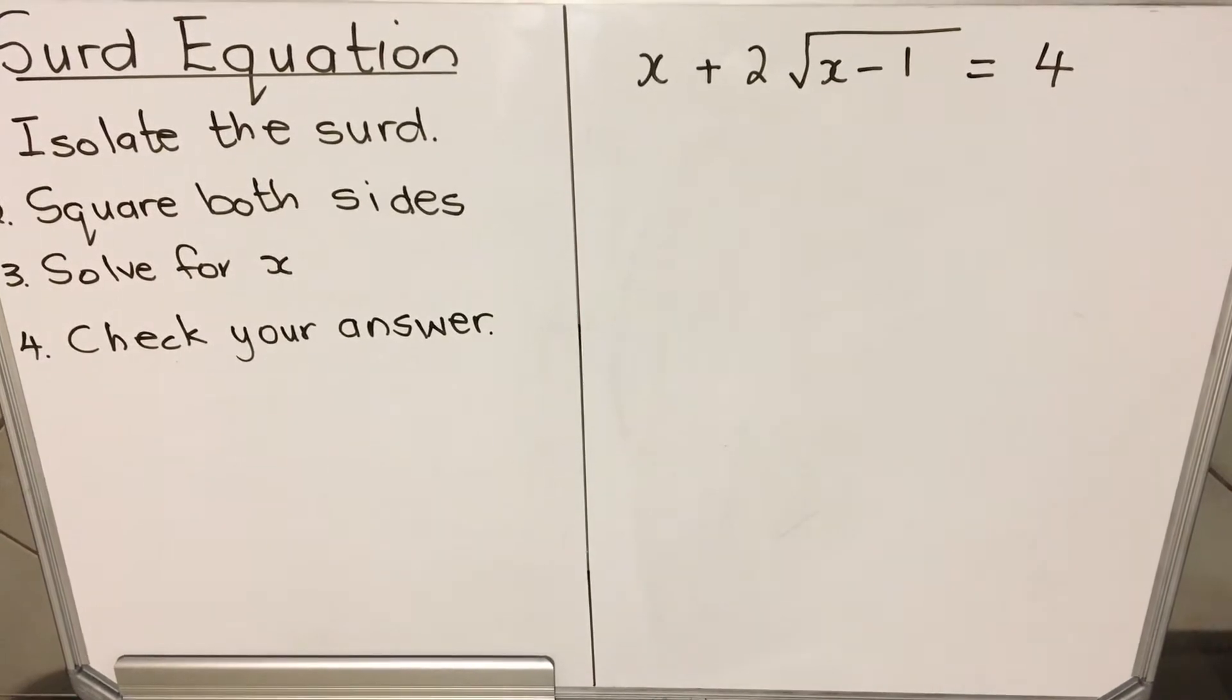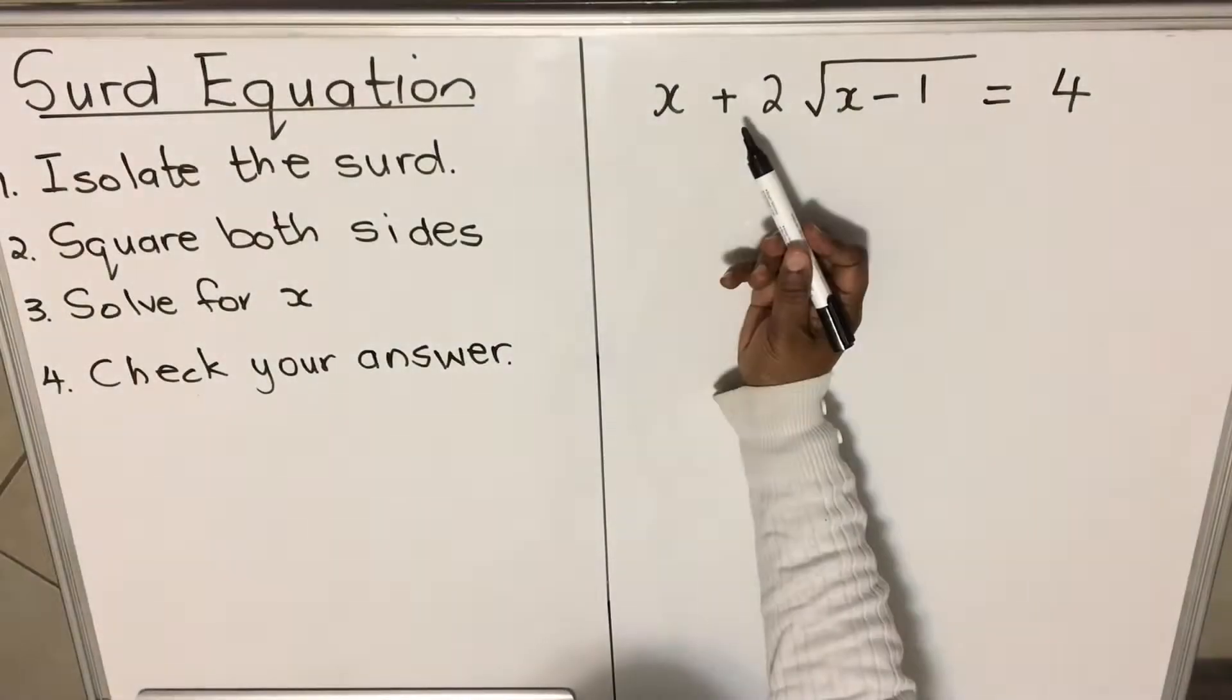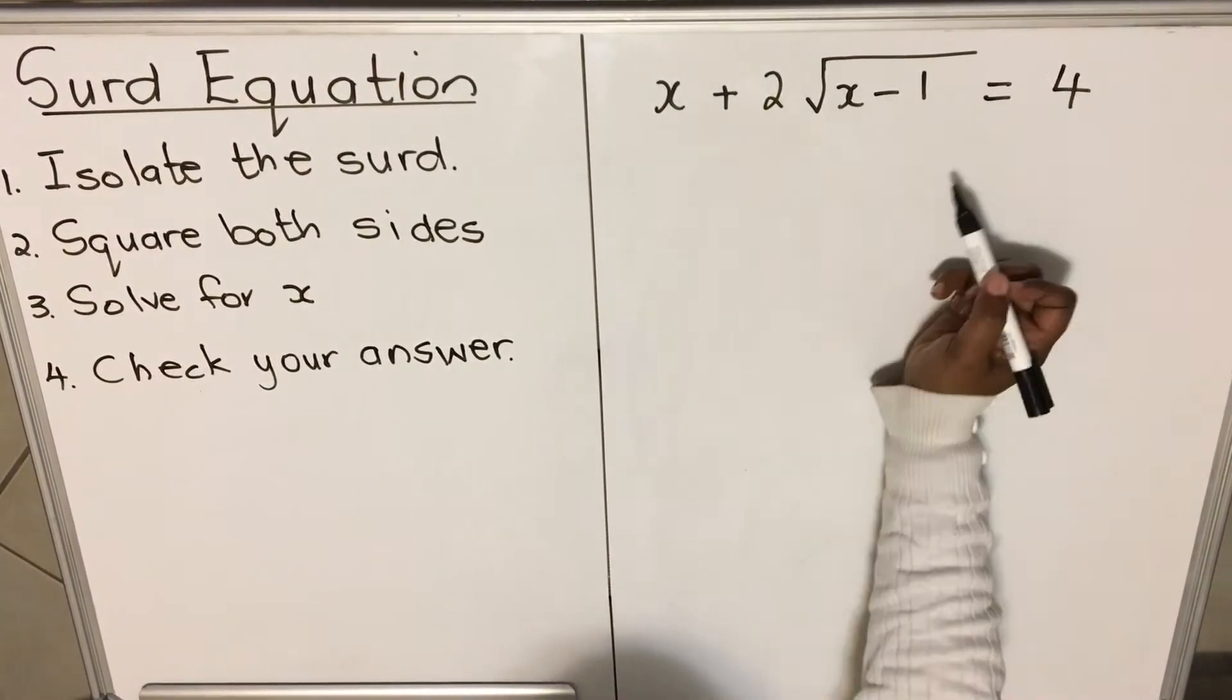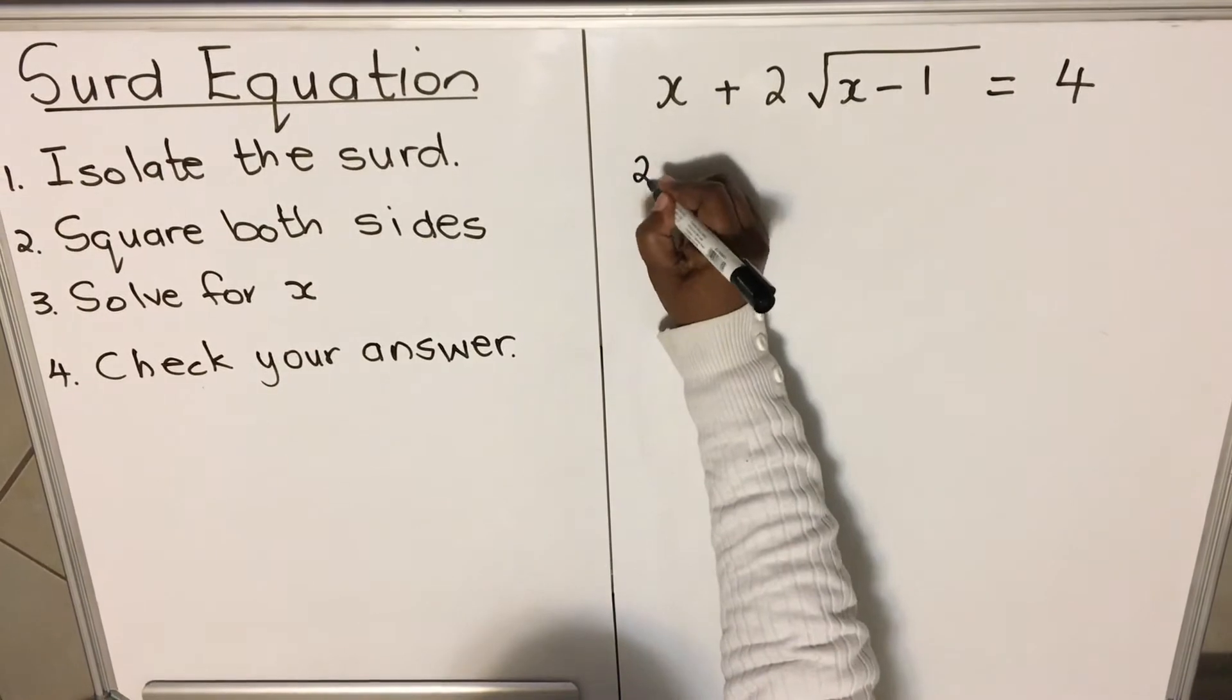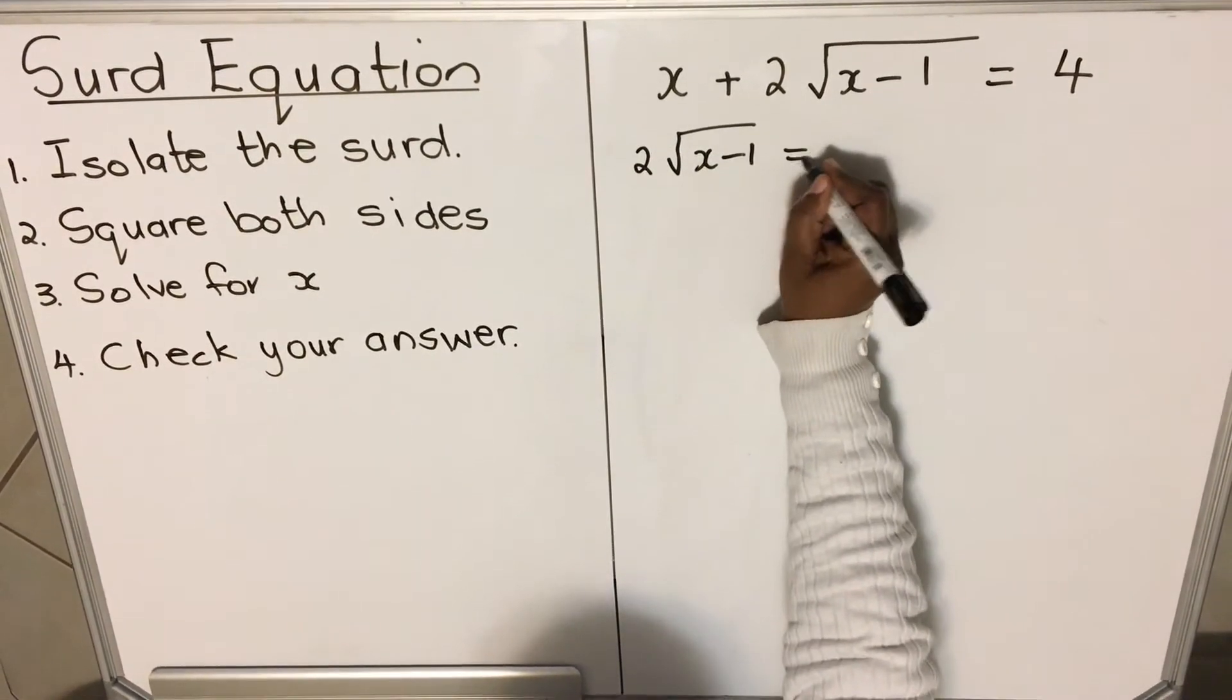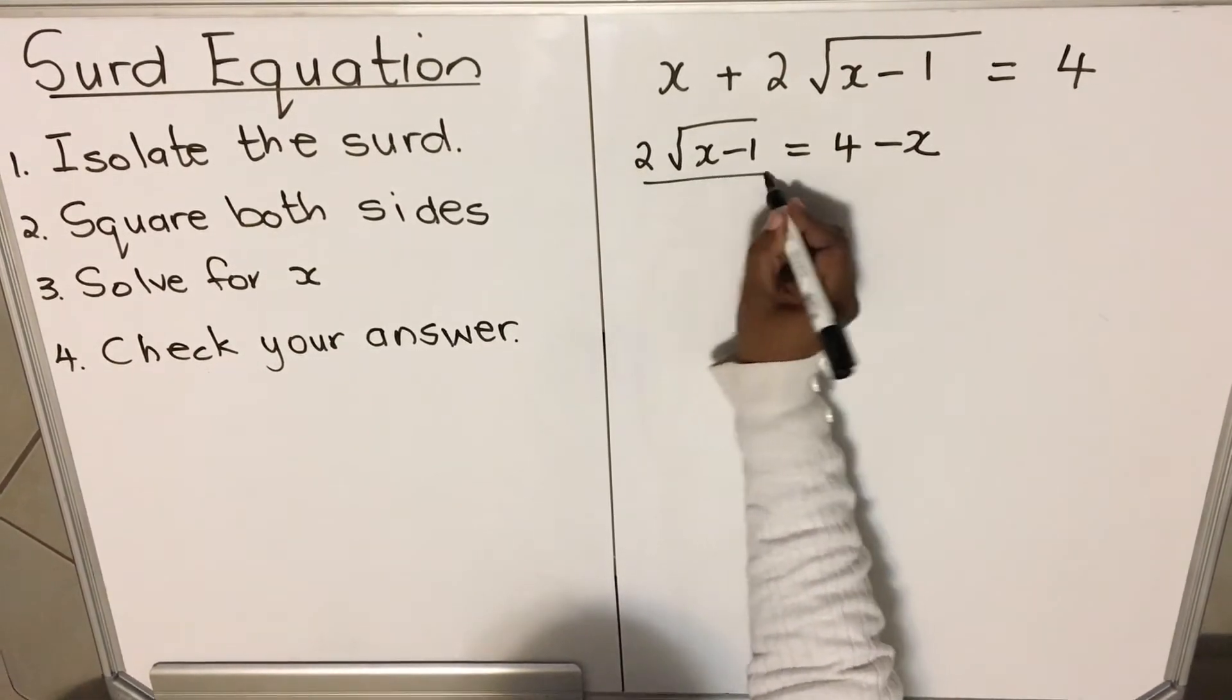Let's start with an example. When they say isolate the surd, we need to leave it all by itself. So we're going to take the x to the other side. We'll have 2√(x-1) = 4-x. But we still have that 2, so we divide by 2 both sides.